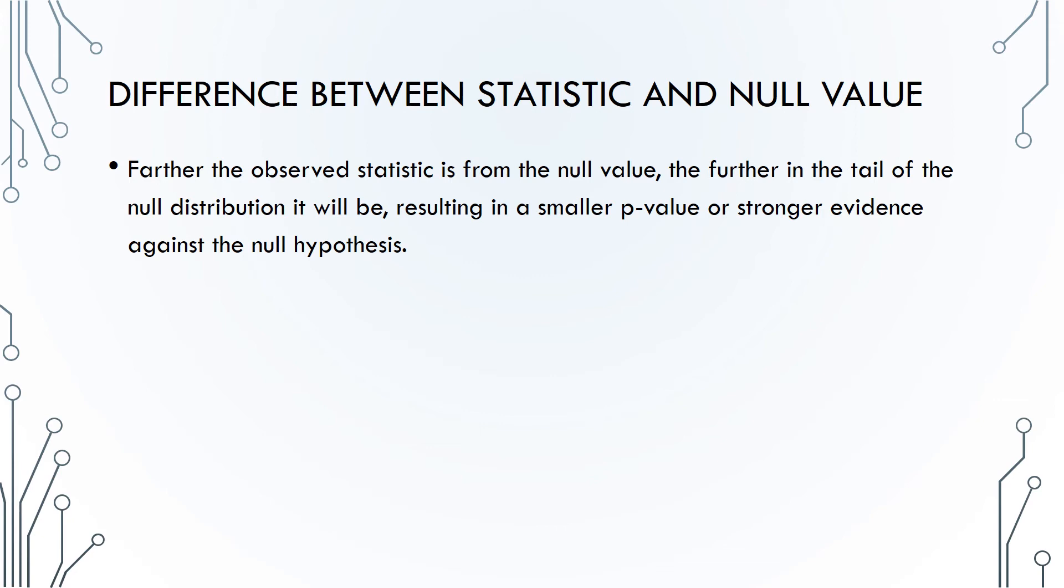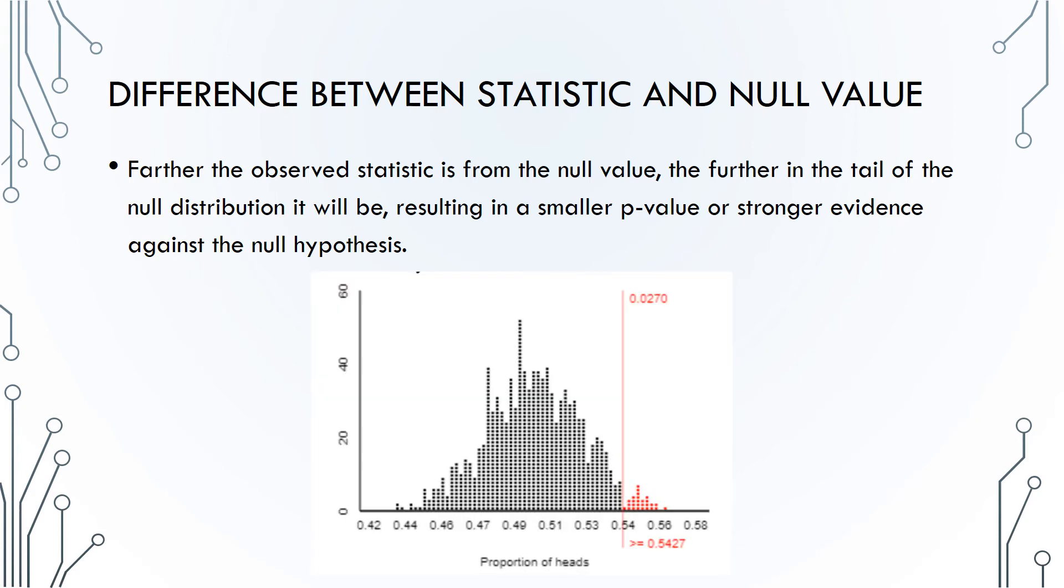The difference between the statistic and the null value: this one should be fairly intuitive. The more different our data is from the null hypothesis, in the direction of the alternative at least, the less we believe the null hypothesis. Again, here I show you what you should have gotten for part 3c, where the observed statistic was 248 out of 457, or 0.5427. There were 27 of our 1,000 simulated proportions at least that far above the null value of 0.5, so the p-value was 0.027.